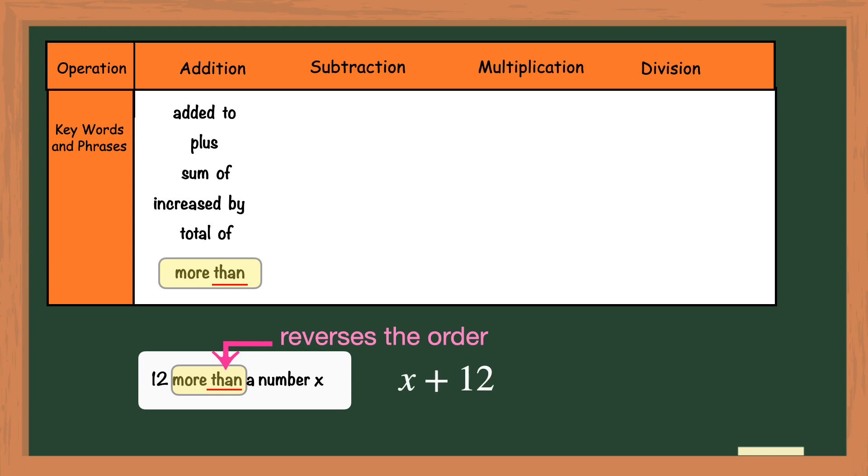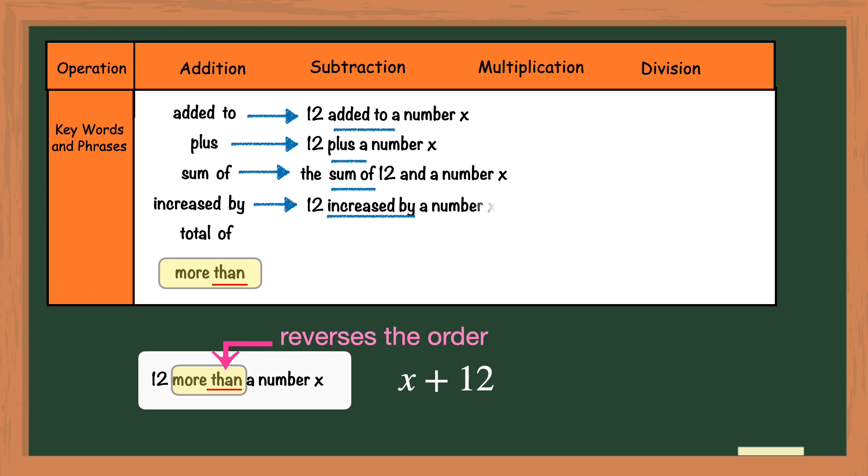All of the other phrases listed in the table would not have changed the order of the numbers. Let's look at those next. I'm going to use the same number and variable 12 and x in these key phrases listed here above. The algebraic expression for all of these keywords and phrases is 12 plus x.